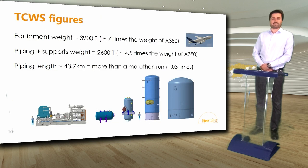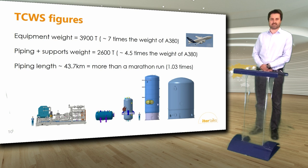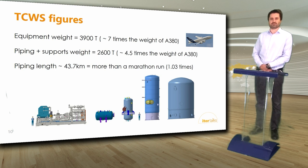To give an idea of the magnitude of this system: overall we have approximately 7,000 tons of equipment, piping, valves, and supports — a little more than 11 empty Airbus A380s. The overall piping length of the TOKAMAK cooling water system is just above 43 kilometers. This is a rather huge system, especially when compared to the primary cooling water system of a fission nuclear power plant.